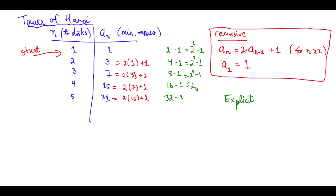16 is 2 to the fourth minus 1. And of course, 32 is 2 to the fifth. And we have minus 1 here.